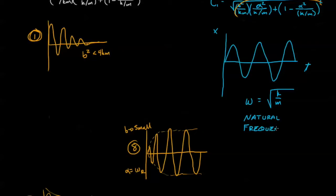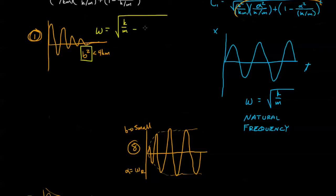Our next step was to introduce damping, and we found that if we kept the damping small — specifically b squared less than 4km — we saw that there was continued oscillation, and we called this the damped natural frequency. The frequency was a little bit different, slowed down. The reasoning is: the damping is slowing us down as we try to return to equilibrium, so it takes us longer to get there, and that's borne out in our damped natural frequency.